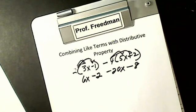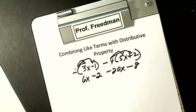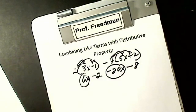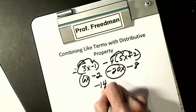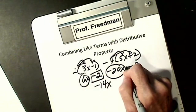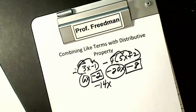After doing all distributive property — multiplication rules: like signs are plus, unlike are negative — I then combine like terms using addition and subtraction rules. If signs are alike, add and take the same sign; if signs are different, subtract and take the sign of the larger. I have positive 6x and negative 20x — subtract, take the sign of the larger: negative 14x. I combine numbers: negative 2 and negative 8, signs are alike — I get negative 10. Final answer: negative 14x minus 10.